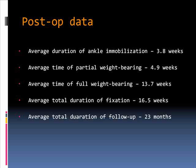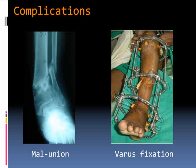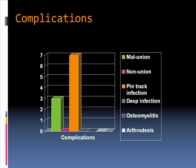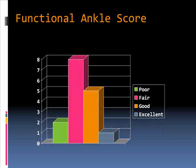The average duration of ankle immobilization was 3.8 weeks, and the average duration of fixation was 16.5 weeks. We had some complications: one case where the wire cut through into the ankle joint causing malunion, and another requiring reapplication of the fixator. The most common complication was pin track infection — the only major concern with this method. Importantly, we had no cases of deep infection, osteomyelitis, or arthrodesis. Using the modified AOFAS score, most cases achieved fair, good, or excellent results, with only two cases having poor outcomes.